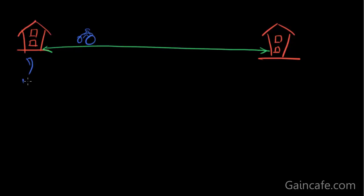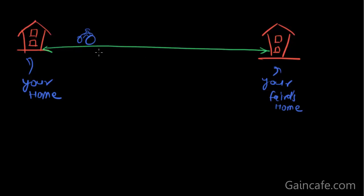Look at the figures. This is your home, this is your friend's home, and this is your bike. Your friend's home is too far from your home, and you don't have enough fuel in your bike to reach your friend's home. So let's go in an electronic way to understand this scenario.